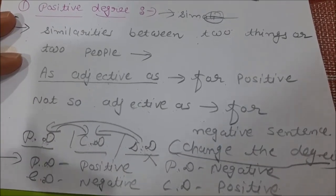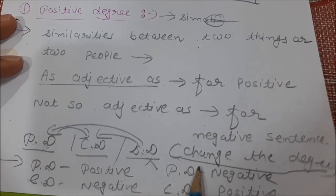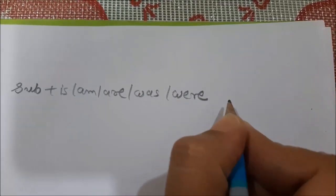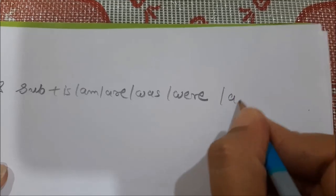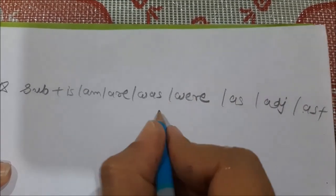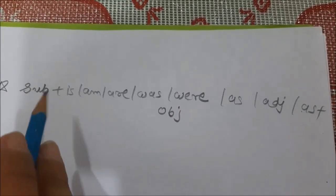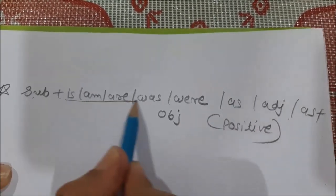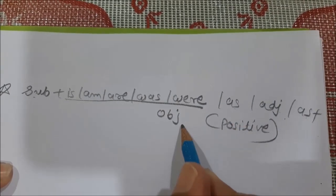Just remember the common rule for PD and CD: positive–negative, negative–positive. Now let's start with the structure. The structure for positive degree is: subject + auxiliary (is/am/are/was/were) + as + adjective + as + object. For example: 'She is as pretty as a rose.' Subject: she; auxiliary: is; as + pretty + as; object: a rose.